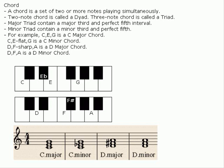For example, C-E-G is a C major chord. C-E-flat-G is a C minor chord. D-F-sharp-A is a D major chord. D-F-A is a D minor chord.